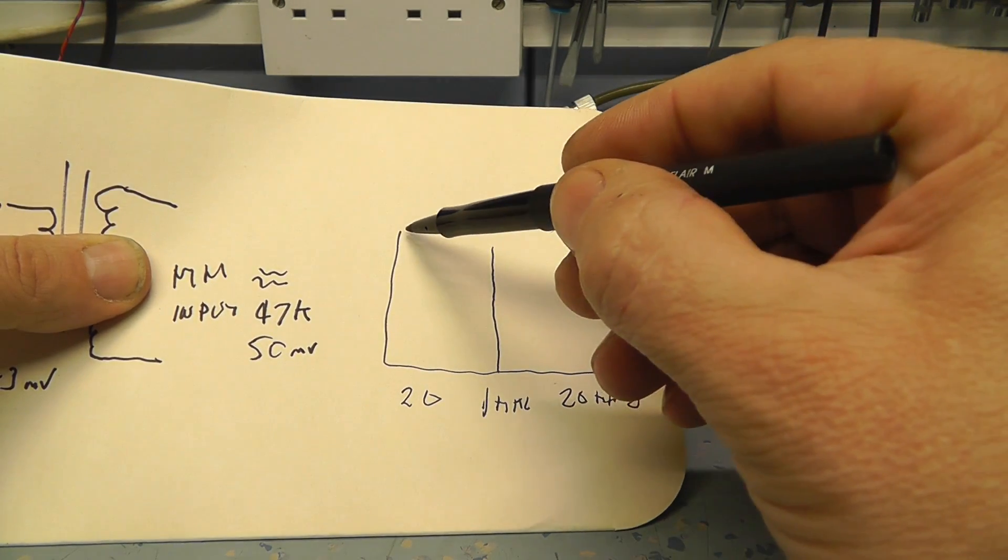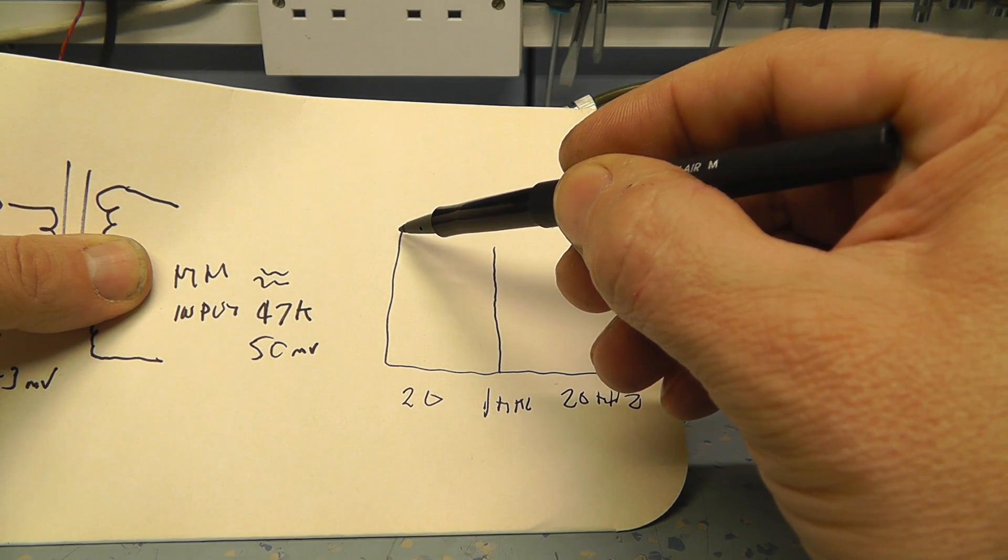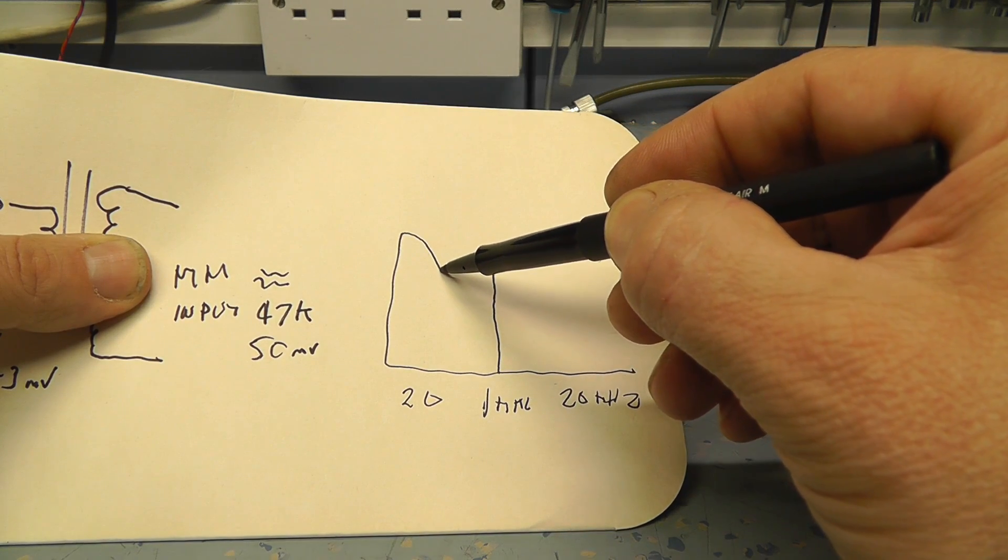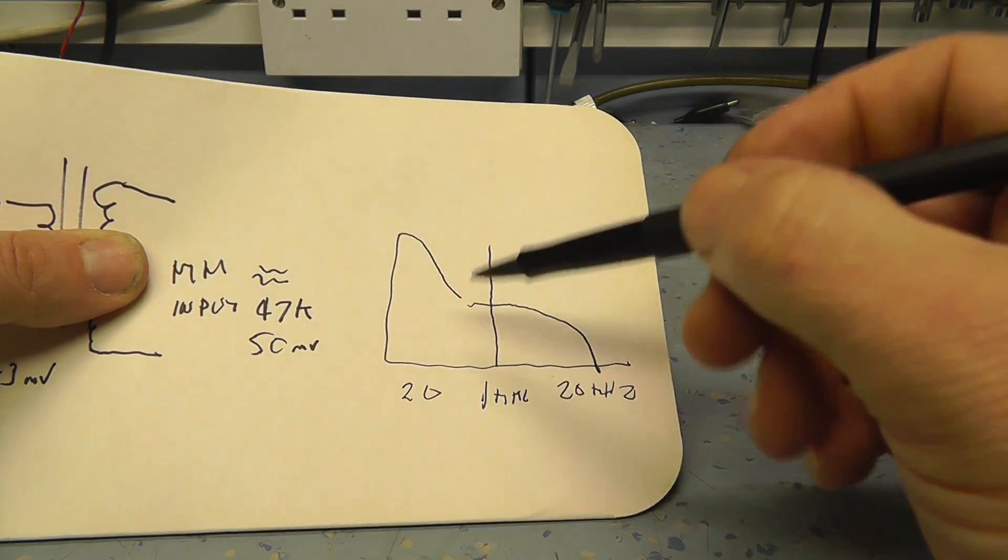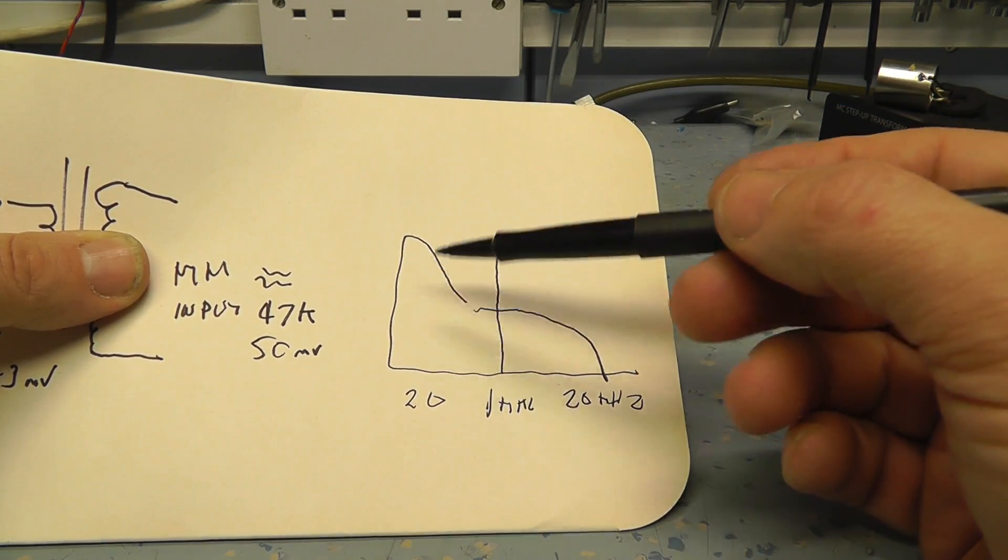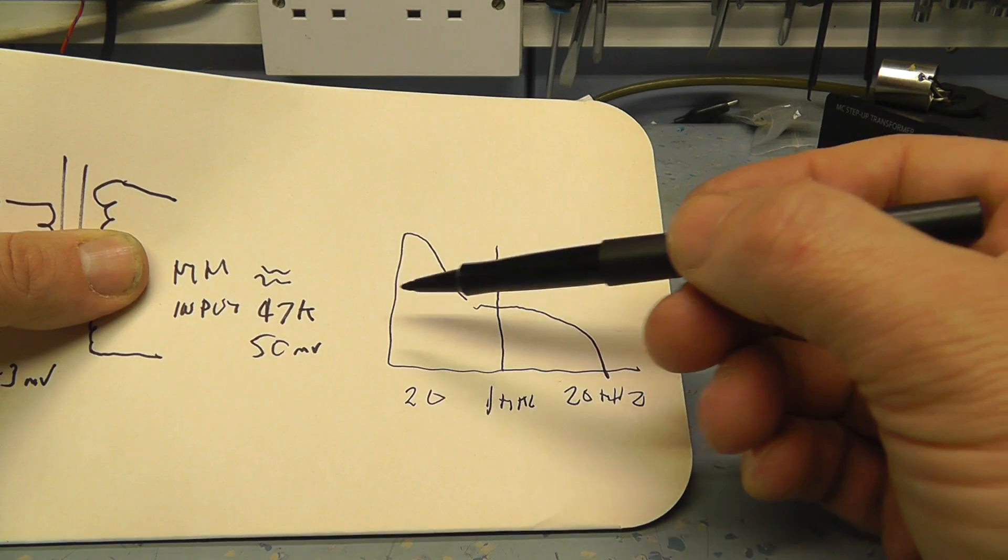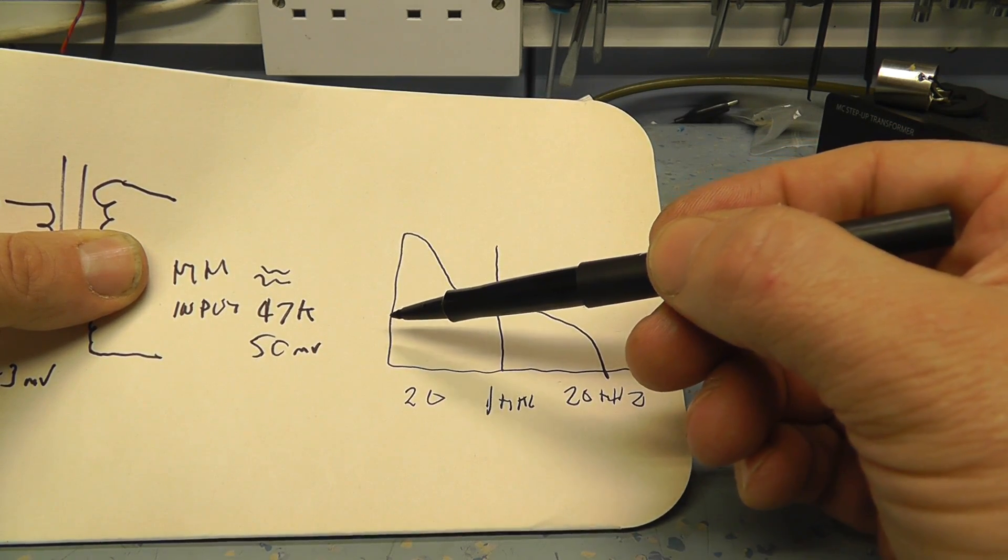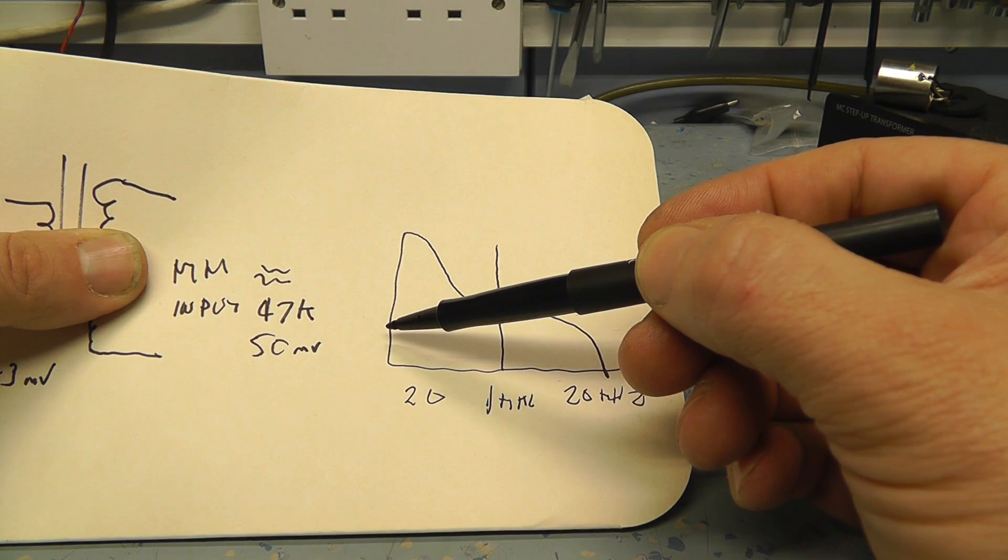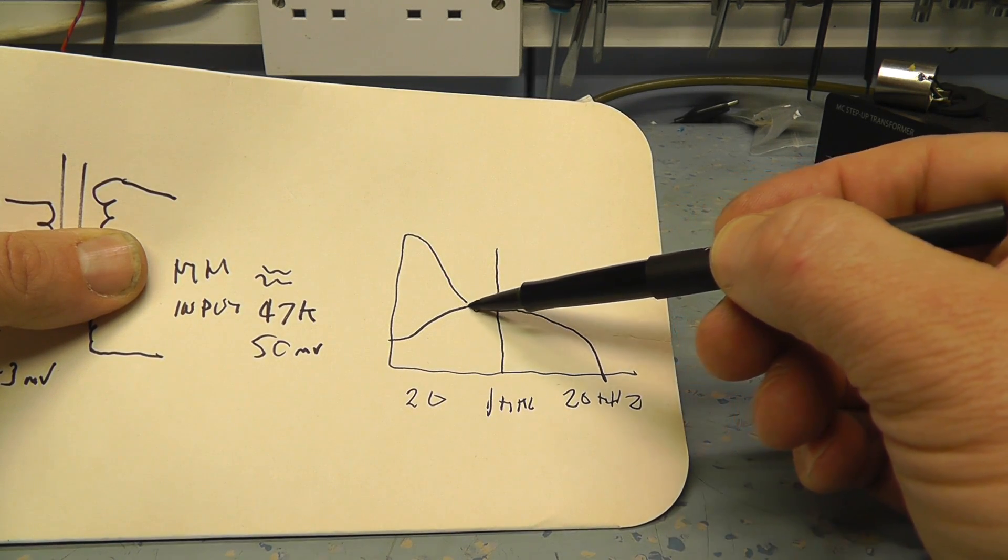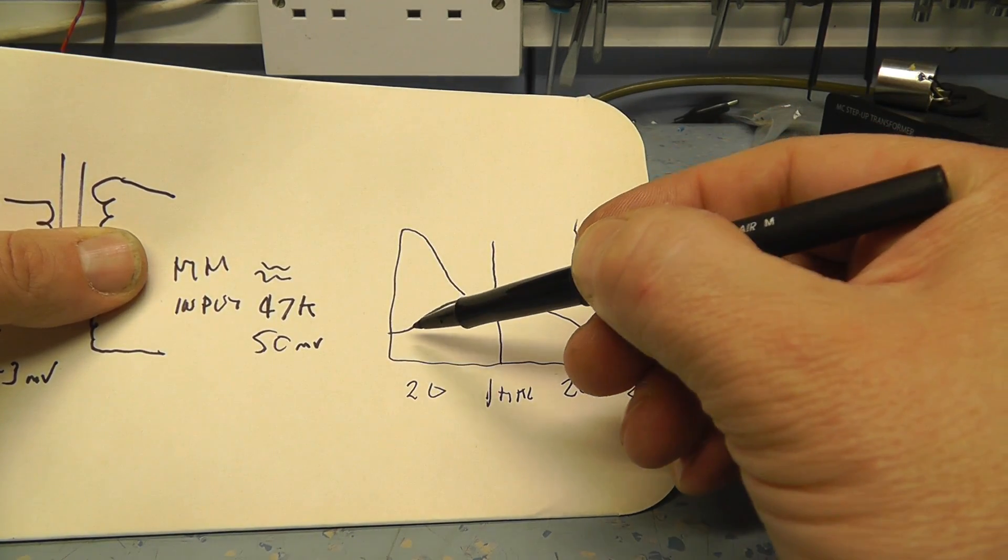So what it will do on the pre-amplifier, so the amplifier will boost the bass like that, come to, and then drop the treble. And what that does is it reduces background noise from the surface of the record. And then what the cartridge does and how the record is recorded is the total opposite. So it cuts the bass and boosts the treble.